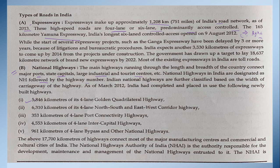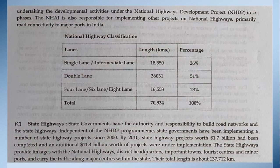Famous national highway projects include the Golden Quadrilateral highway of 5,846 km with four lanes, and the North-South and East-West Corridor of 6,380 km with four lanes. The classification of national highways includes single lane, intermediate lane, double lane — with double lane being the most common at 51% — then four lanes, six lanes, or eight lanes.